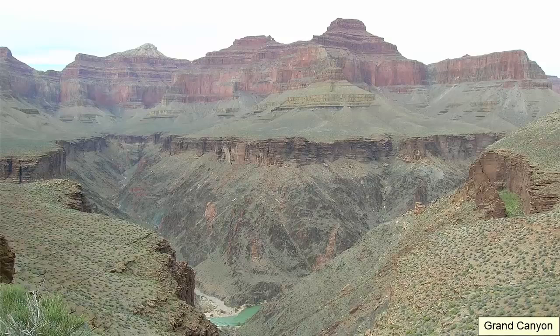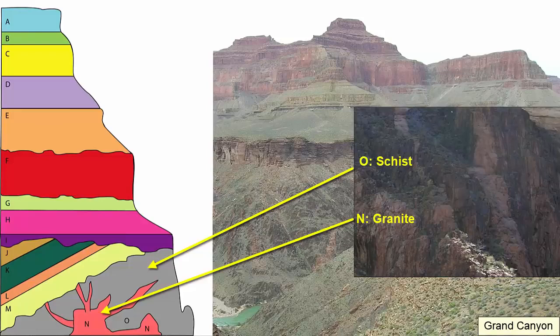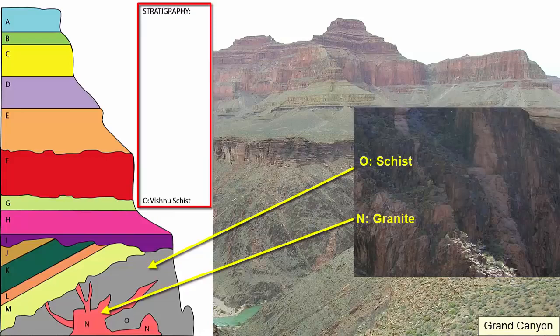Let's practice these principles by building a stratigraphy for a cross-section through the Grand Canyon. If you were to hike down into the Grand Canyon, the top is where you would start and the base is where the Colorado River runs. The oldest rocks appear closest to the bottom: O, a schist, and N, a granite. Granites intrude into existing rocks, so the schist likely happened first. Schists form through high-grade metamorphism, and if the granite had been present before or during metamorphism, it would also have turned into a schist. So the schist was there first and is the oldest, followed by the intrusion of the granite.